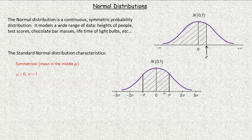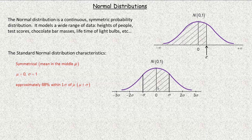The distance from the mean to one standard deviation above or below is 1. One of the key characteristics of a normal distribution is that 68% of the data falls within one standard deviation of the mean — one standard deviation below and one standard deviation above.